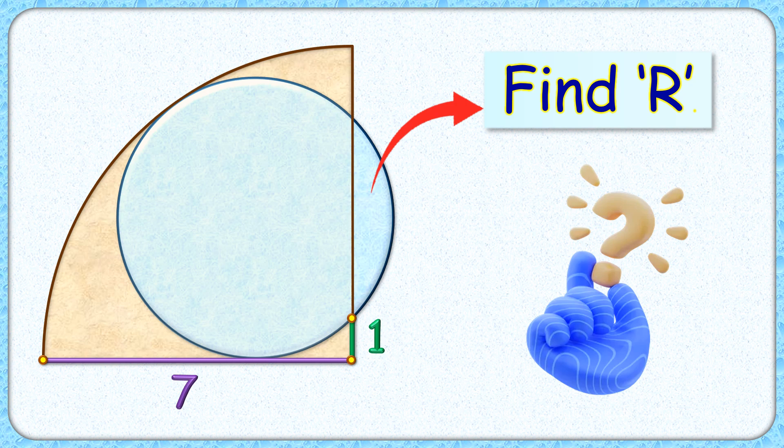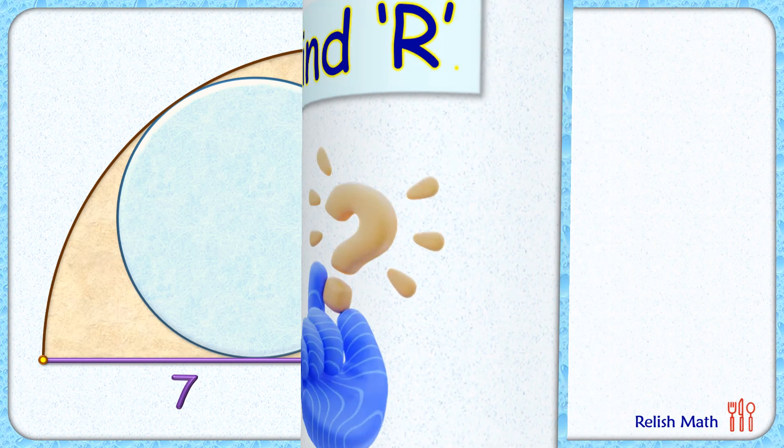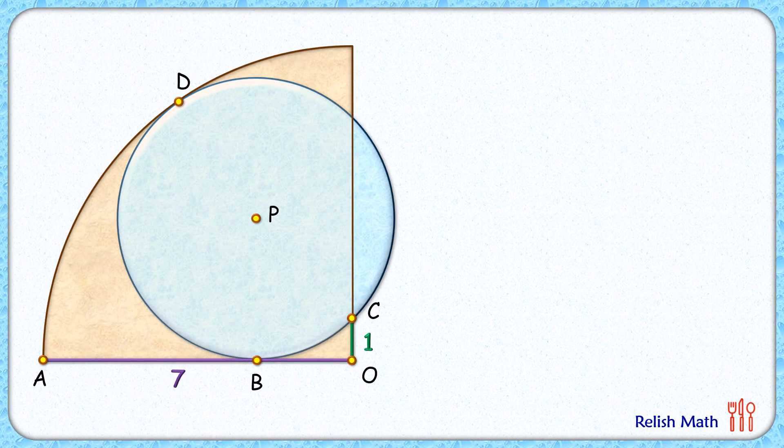Welcome everyone. This interesting question given to us is a quadrant and a circle. The radius of the quadrant is given as 7 centimeters, and the length of this green line segment is given as 1 centimeter. The exciting part is, with this limited data, we have to find the radius of the circle. Let's check this simple and elegant solution.